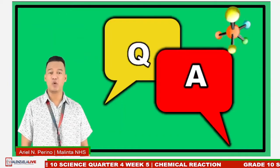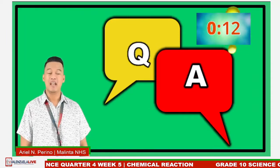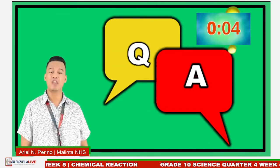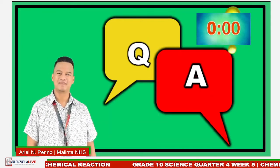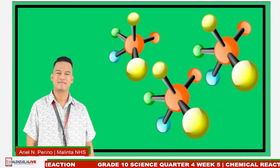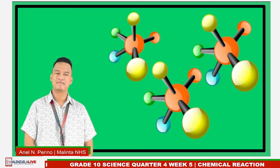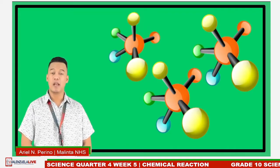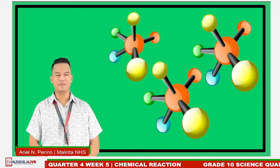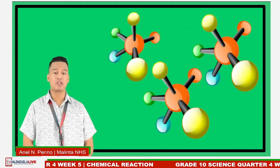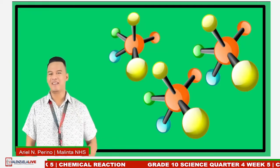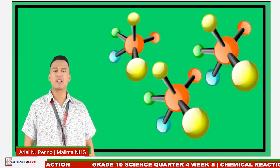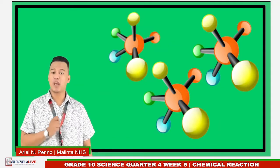At this moment, you are free to write your questions in the comment section. The teacher moderator will choose two questions that I will try to answer. You have 15 seconds. Question number one: Why is it not allowed to change the subscript in balancing a chemical equation? When balancing, you cannot change the subscript because doing so changes the substance itself, which will make your chemical equation wrong.